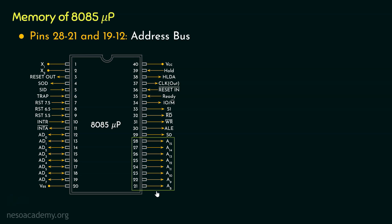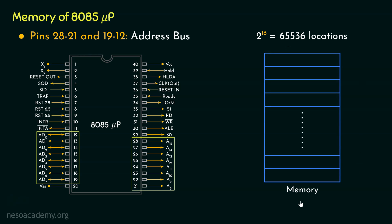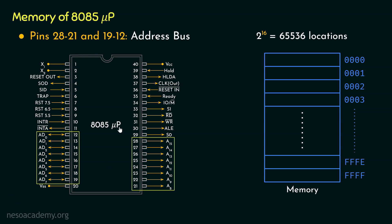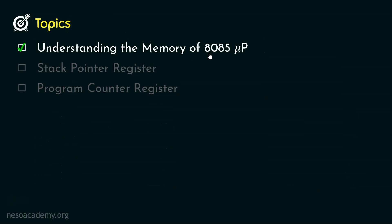From this we can understand that using the pins 21 to 28 and 12 to 19, we are talking about 2 raised to the power 16, that is 65,536 locations in the memory connected to the 8085 microprocessor. The first location has the address 0000 in hexadecimal and the last location has the address FFFF. This is the main memory associated with the 8085 microprocessor, and using this 16-bit address bus, the microprocessor can access all 65,536 locations.